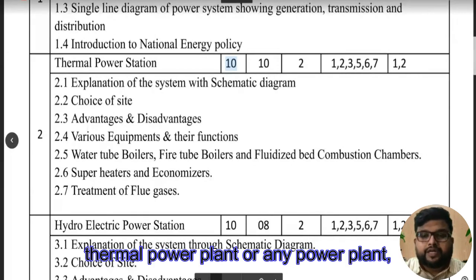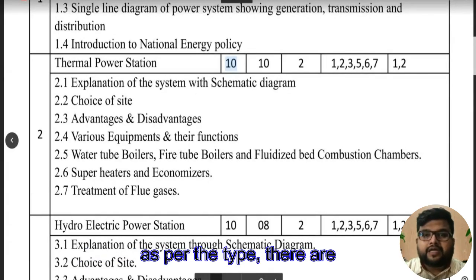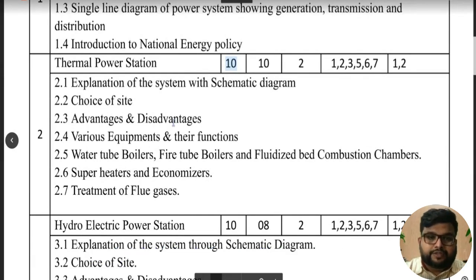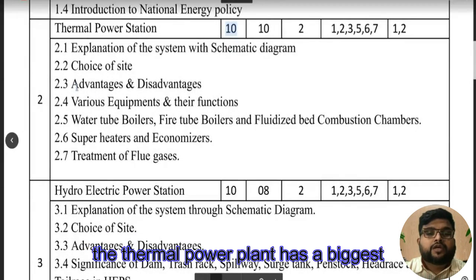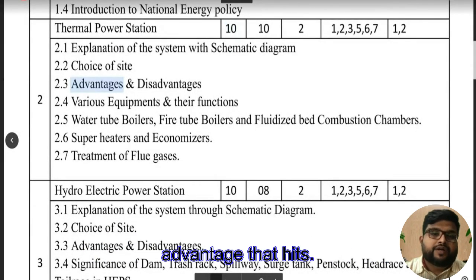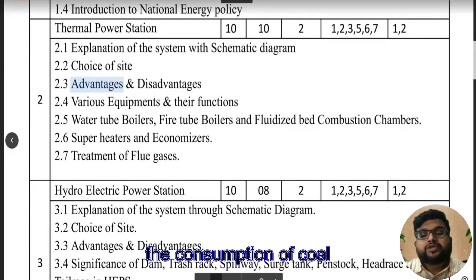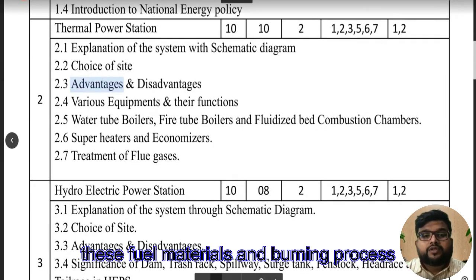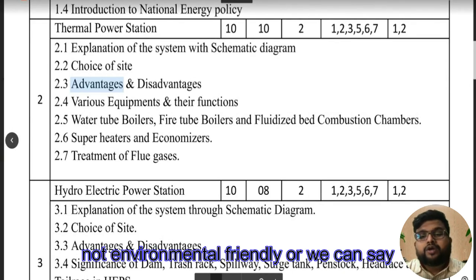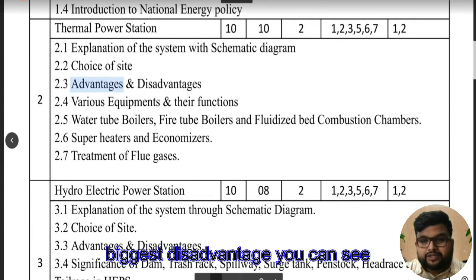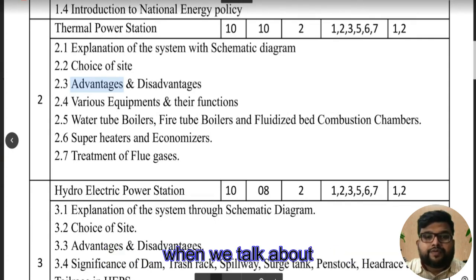For any thermal or other power plant, there are certain advantages and disadvantages of that particular technology. The biggest advantage of the thermal power plant is its reliability. The biggest disadvantage is that burning coal and other fuels is not environmentally friendly — it pollutes the environment. That is one of the biggest disadvantages.